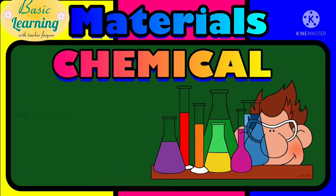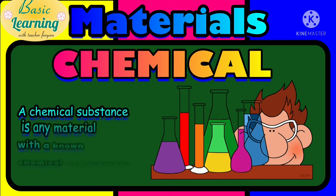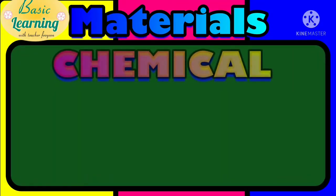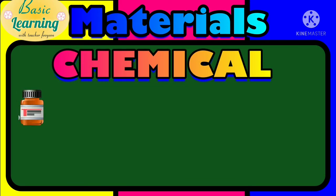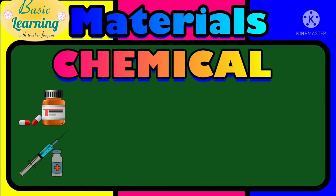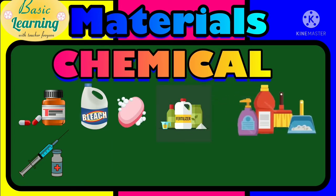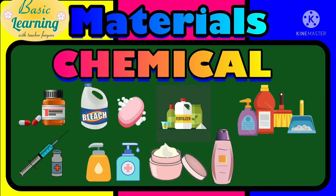The seventh type of material is chemical. A chemical substance is any material with a known chemical composition. A chemist works in a lab upon chemicals to create a wide variety of things. Examples of things made from chemicals include medicines, injections, bleach, soap, fertilizers for plants and trees, floor and bathroom cleaners, hand wash, sanitizers, creams and lotions, shampoos, dishwash soap, and even makeup.